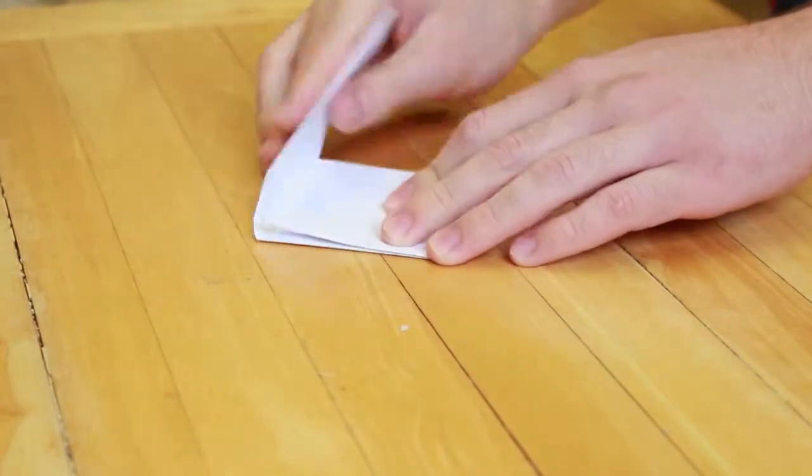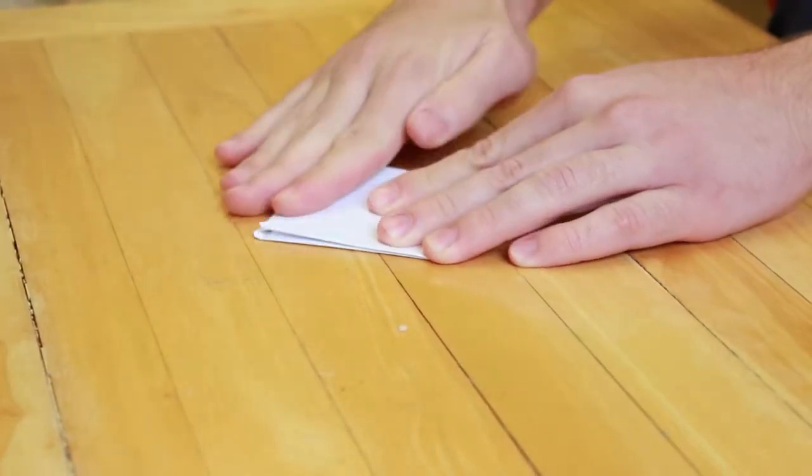Now fold both corners in to make a square, then release your hands, and it should look like this.